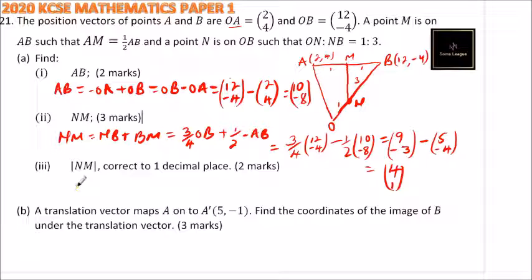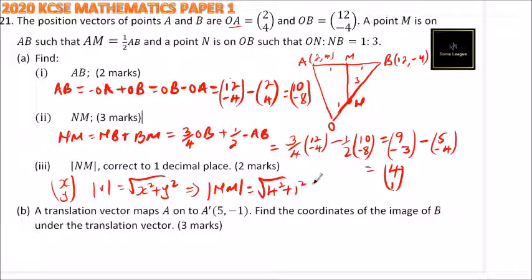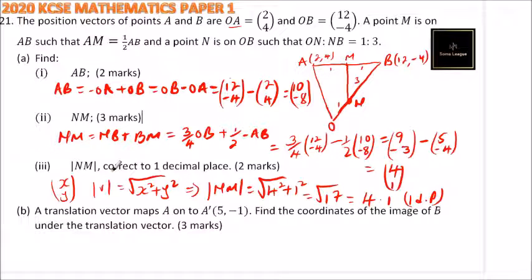Part number 3, we are told to find the magnitude of NM. When you are given a vector (x, y), the magnitude equals the square root of x squared plus y squared. The magnitude of NM equals the square root of 4 squared plus 1 squared, which is the square root of 17, approximately equal to 4.1.